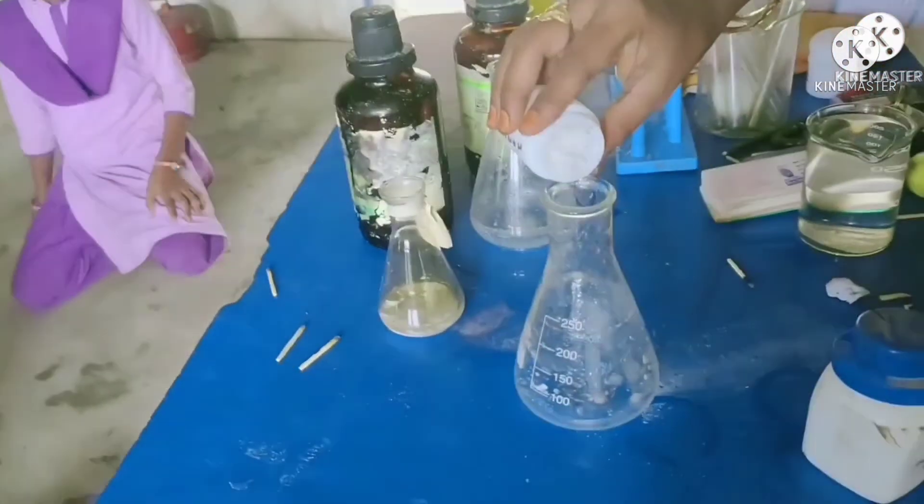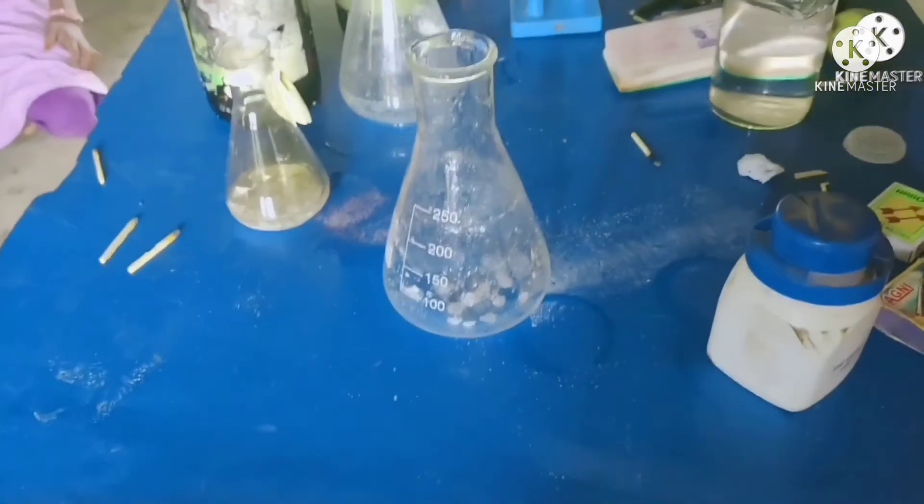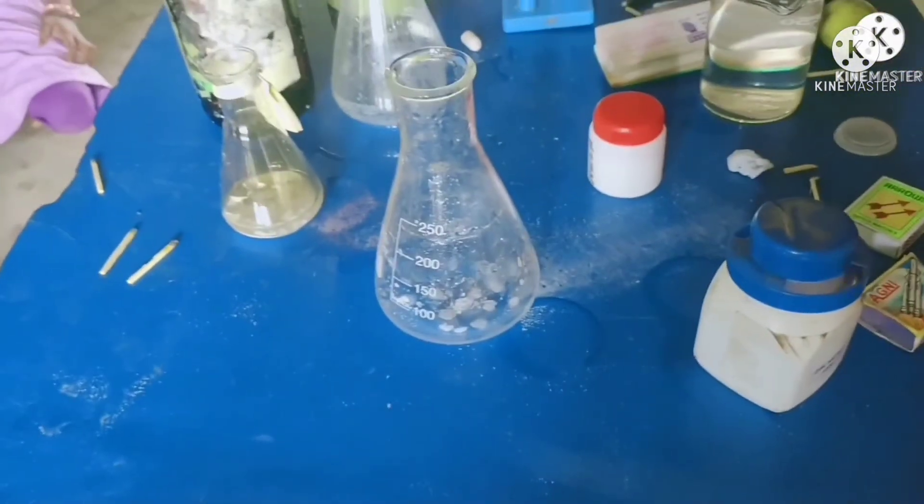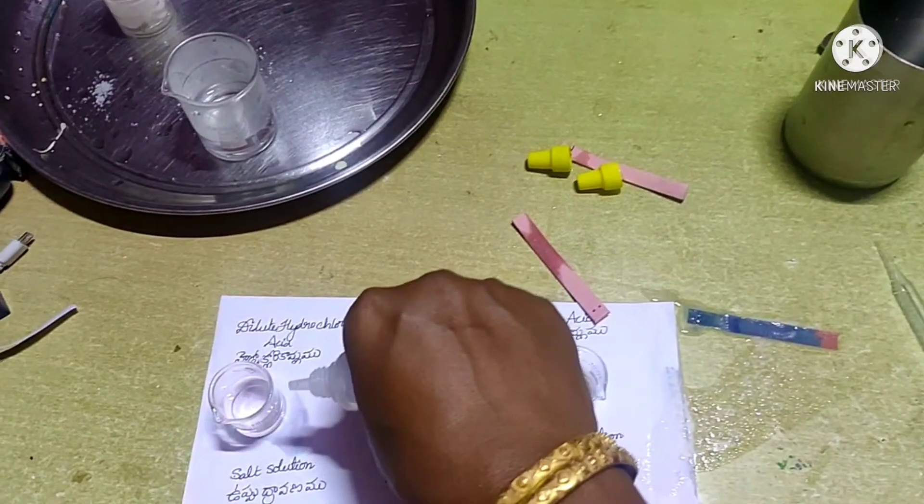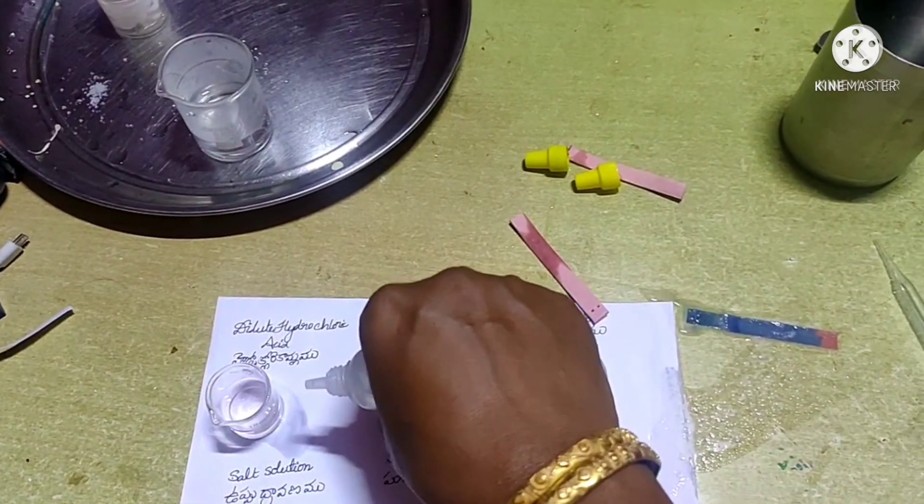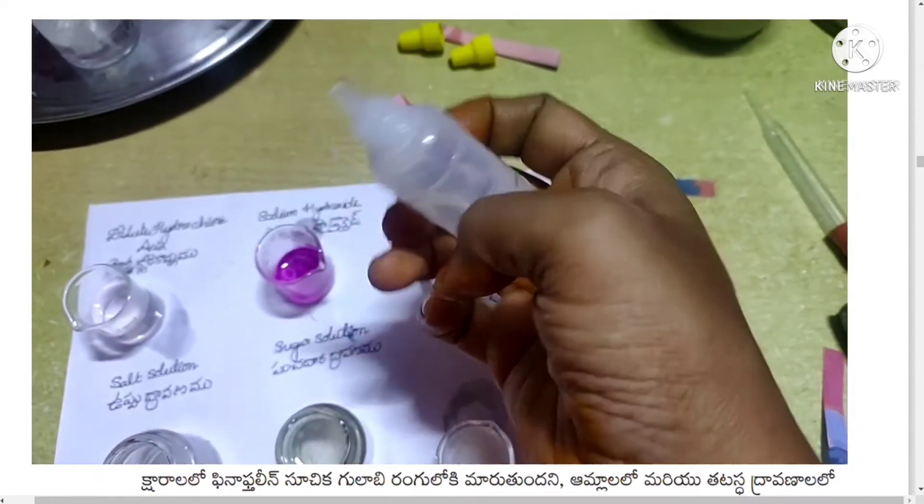See Activity 7: Take sodium hydroxide solution in a conical flask and observe its color. Now add two to three drops of phenolphthalein indicator to it. Observe the color - it is pink.